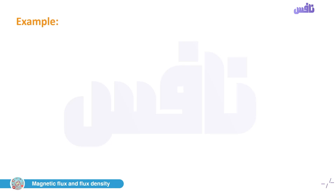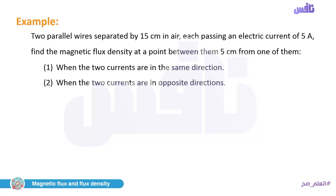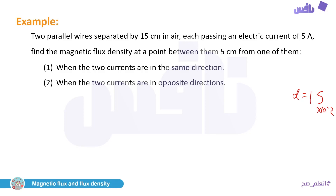Example: two parallel wires separated by 15 cm, each carrying 5 A. Find the magnetic flux density at a point between them, 5 cm from one wire. Since both wires carry the same current, d₁ = 5 cm and d₂ = 10 cm.